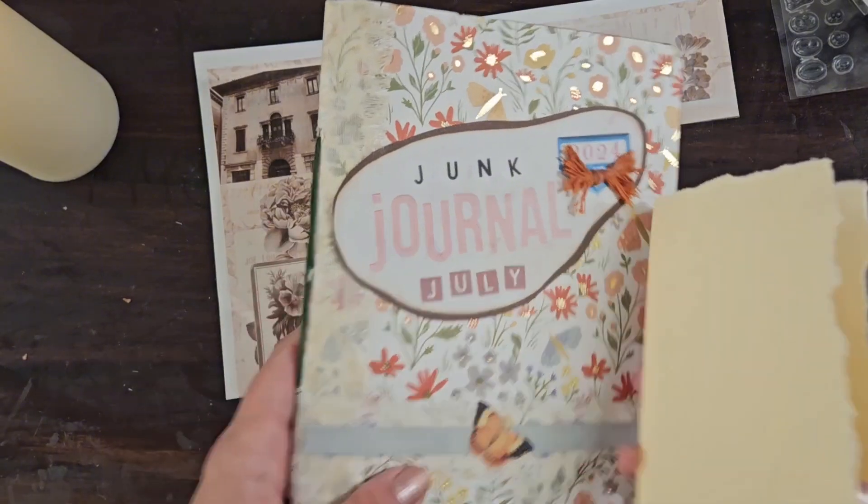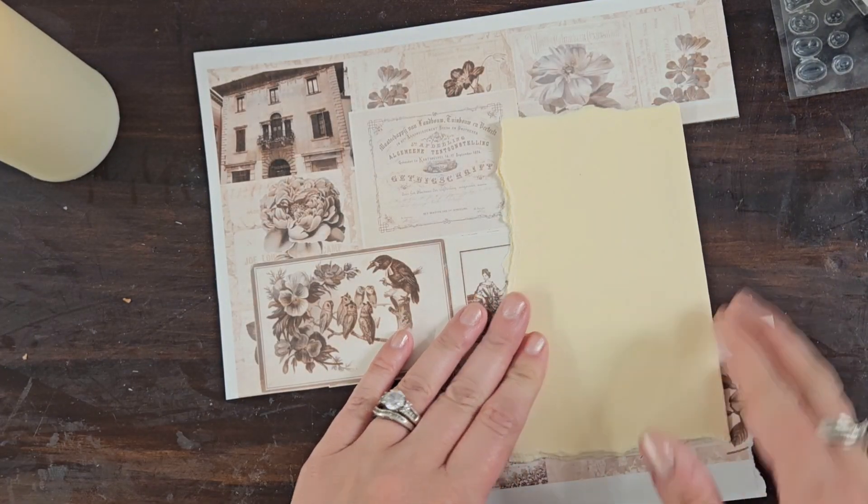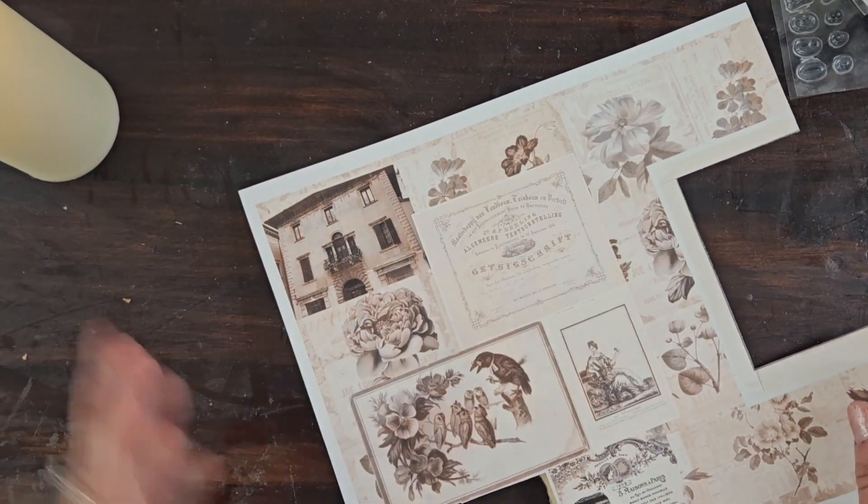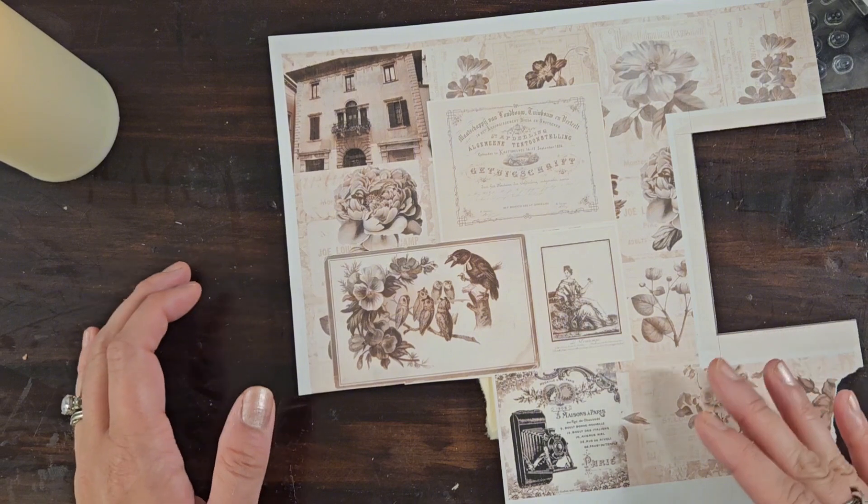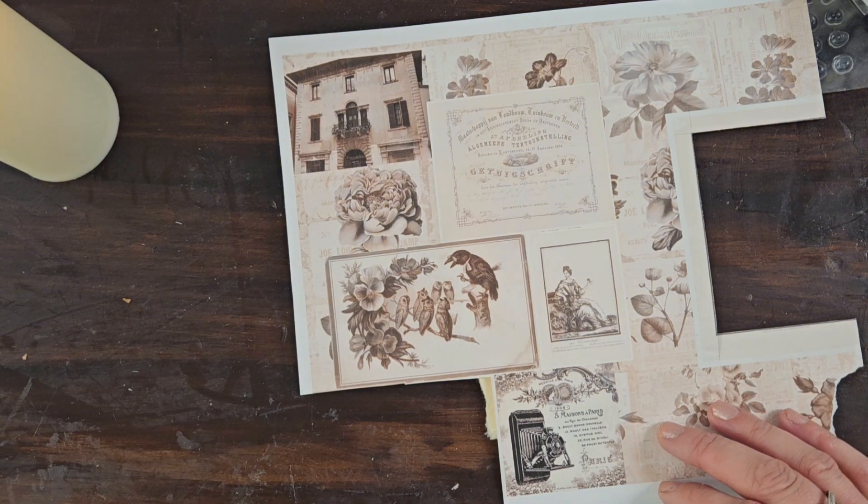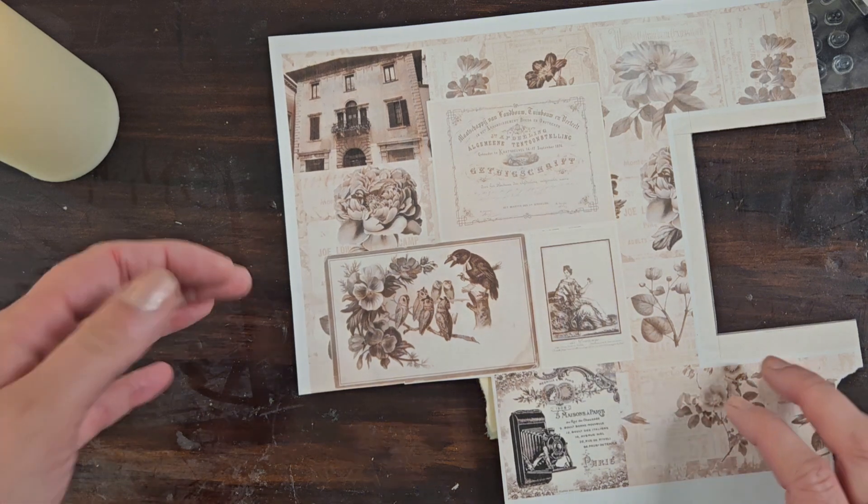So this is what we're going to work on first. And of course, we're going to age it up a little bit, just with some stamping and some inking. And I have this really cool collage sheet. There was a free printable from somebody. That was kind of my thought as to what I'm going to cover it with. And then we'll make our own tags.